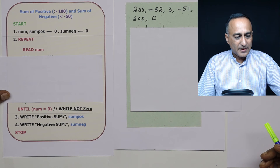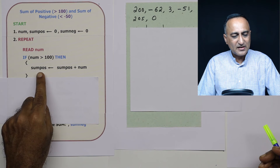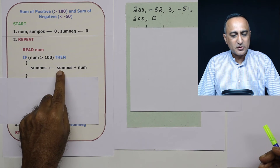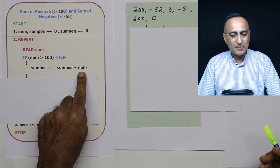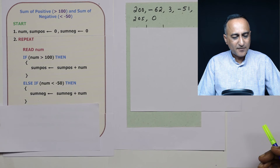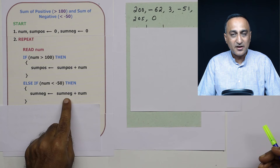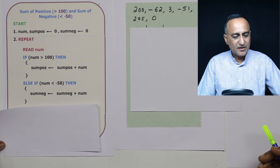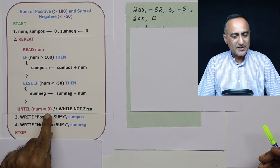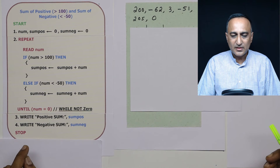If number is greater than 100, I add the old value of sum positive to the number — initially sum positive is zero, so it becomes zero plus the number, which in this case is 200. Else if number is less than minus 50, I take the old value of sum negative and add the number. This continues until I hit zero, at which point step three prints the sum of positive numbers and step four prints the sum of negative numbers.